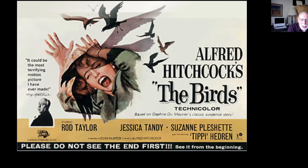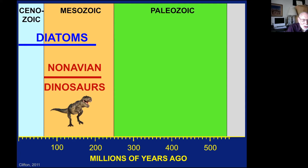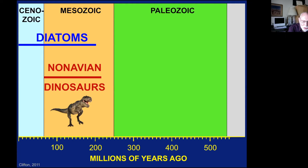Diatoms appeared on the scene after the great crisis that ended the Paleozoic era — fairly early in the Mesozoic, shortly after the non-avian dinosaurs appeared. And unlike the non-avian dinosaurs, they survived the crisis at the end of the Mesozoic and are very important components of our world today. So that pretty much does it for diatoms.